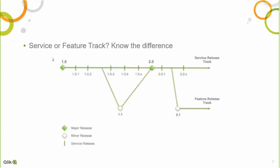The other point is make sure you know what track you're on — service or feature track. In Qlik Sense, we currently have a model where we have service releases that follow on from major releases. What we do is we take that major release and we only fix bugs — we don't add any new features. They're very stable releases in that any problems that arise will hopefully be addressed in the bug fixes, but you don't have new features that can cause new bugs.